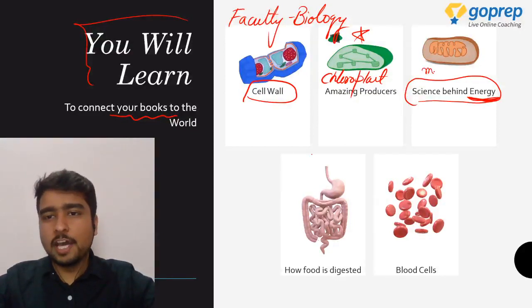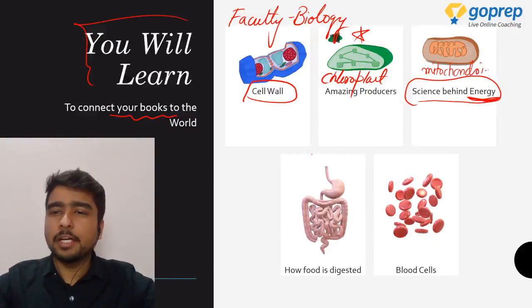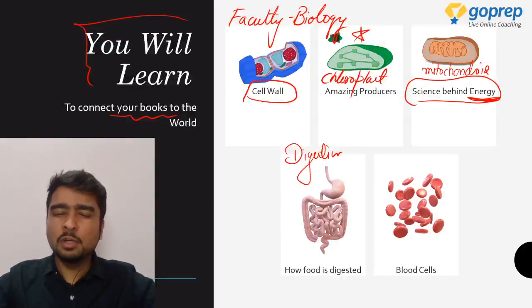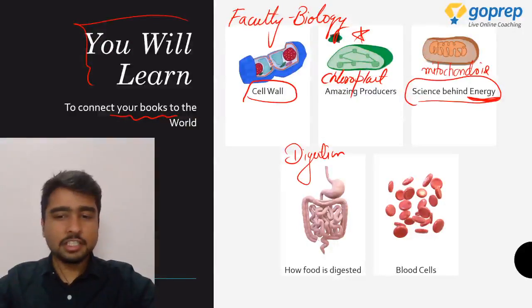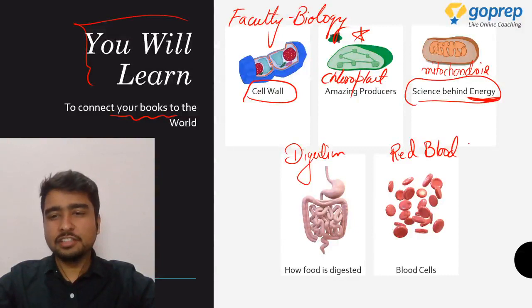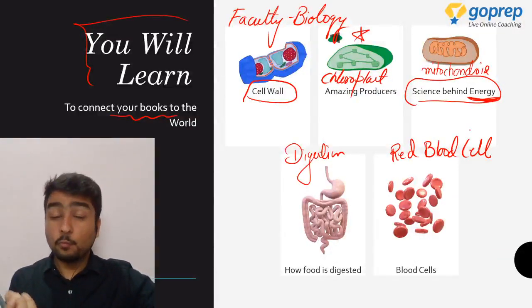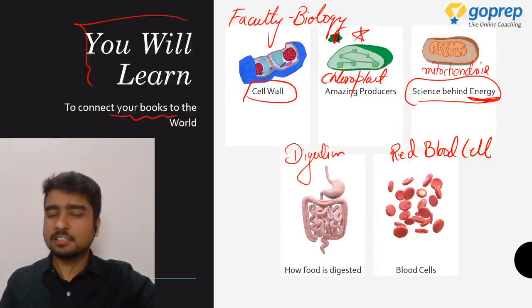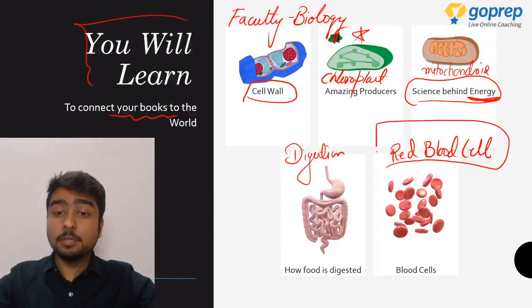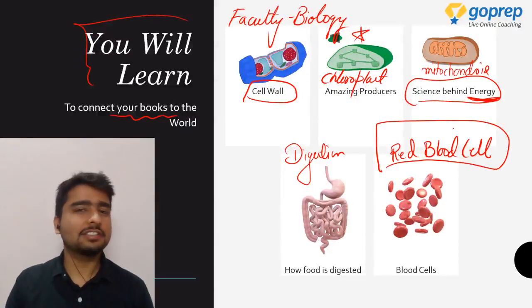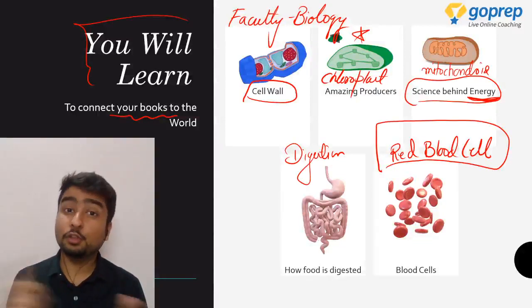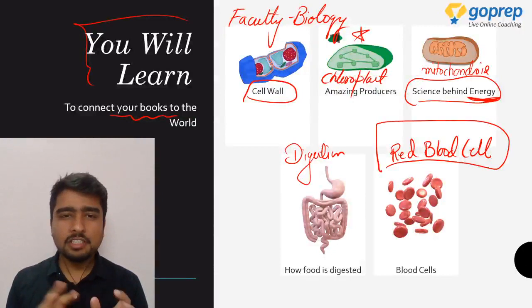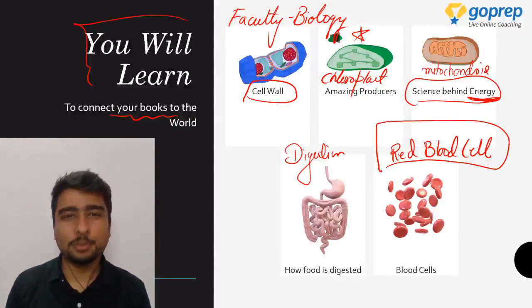We will try to understand mitochondria, we'll understand digestion in humans in depth, and we'll talk about red blood cells — you've heard the name. In our blood you have cells, and one kind is the red blood cell. We'll be reading about that too. These are some interesting topics we are going to discuss in the coming classes — and there will be many more besides these.